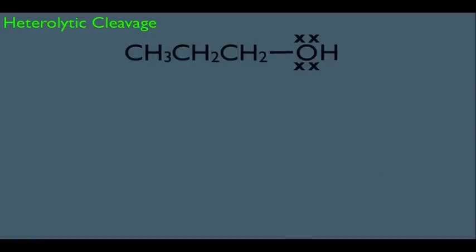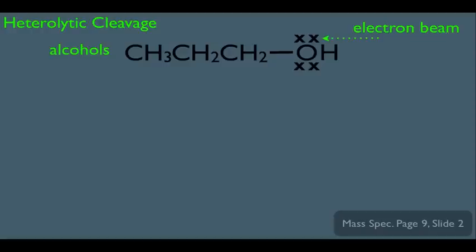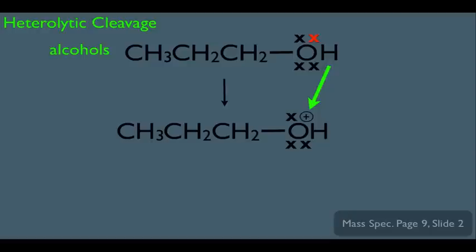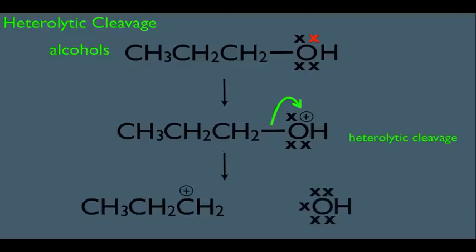Alcohols can cleave heterolytically as well, with the same dynamics. We stick the alcohol in the mass spec; the electron beam dislodges an electron on the oxygen, giving a radical cation. Because the positive charge is on the oxygen, the electrons in the adjacent bond can jump up onto that oxygen — heterolytic cleavage. The resulting charged fragment will be detected by the mass spec, so we should expect to see a peak at 43 for this alcohol.